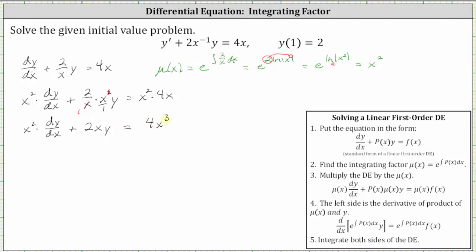Looking at step four, now the left side of the differential equation is the derivative of the product of the integrating factor and y. Which means we can write the left side as the derivative with respect to x of mu of x times y, or the integrating factor times y, which would be x squared y. So this derivative equals x squared times dy/dx plus two xy equals four x cubed.